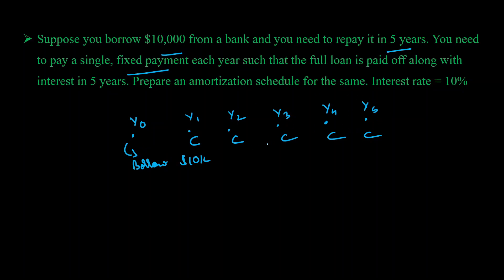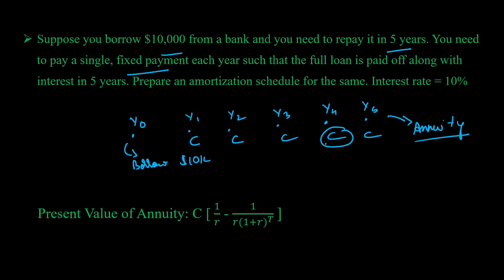We are talking about making equal payments over regular intervals for a limited number of periods, which in this case is five. This is actually an example of an annuity. We need to figure out the value of C, which we can easily do using the present value of an annuity formula. You don't need to figure out the present value of this annuity because that is equal to the amount you're borrowing — ten thousand dollars. You're given the interest rate and the number of periods, which is five. You only need to figure out C.